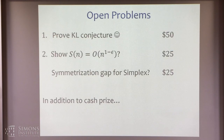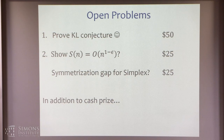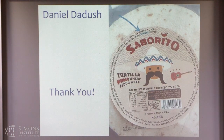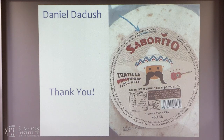Those are some open problems. I learned very recently from Zvika Brakerski that I have an alter ego — Daniel de Douche, wholesale foods, apparently — so in addition to a cash prize, I can also offer tortillas saboritas. In case lattices don't work out, there are other options. Thank you very much.